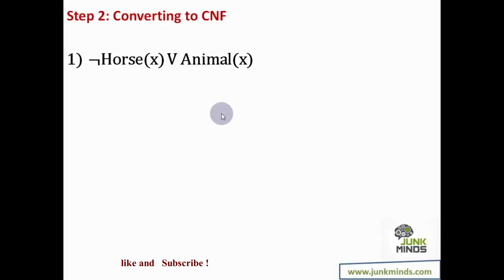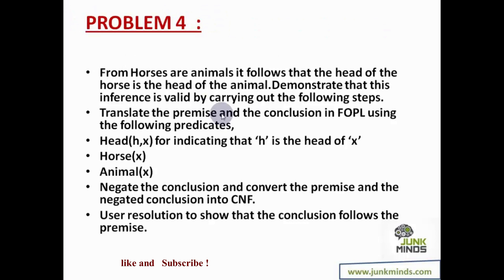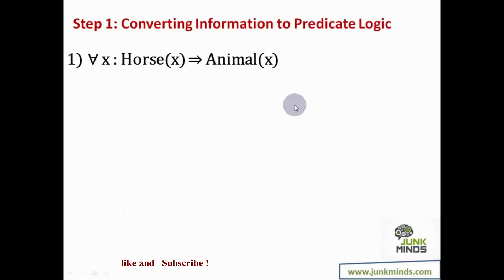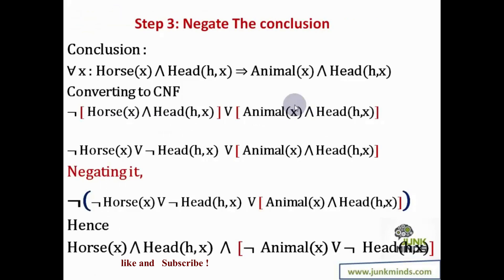Now what is going to be my step three — the most critical part in this problem. Let us read the question carefully: from horses are animals it follows that the head of the horse is the head of the animal. Demonstrate that this inference is valid. The last line says use resolution to show that the conclusion follows from the premise. So the conclusion here is that the head of the horse is the head of the animal, and this is what needs to be proved.